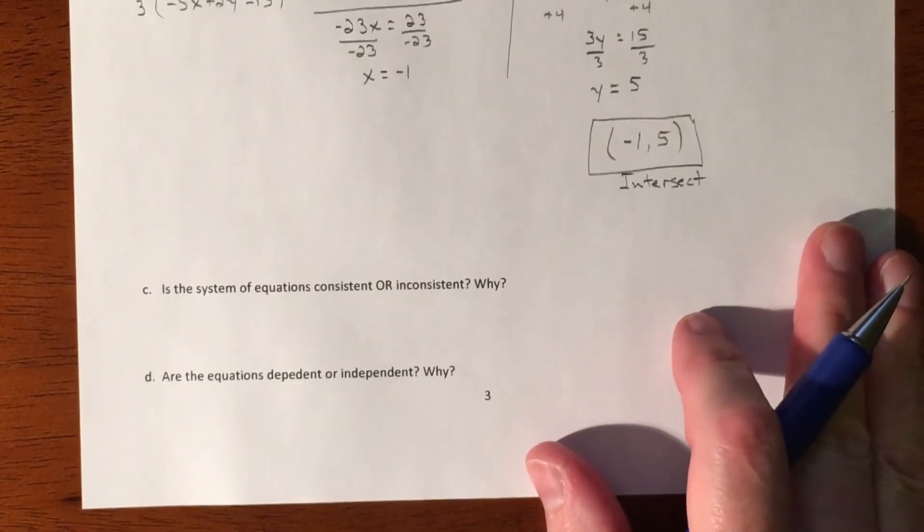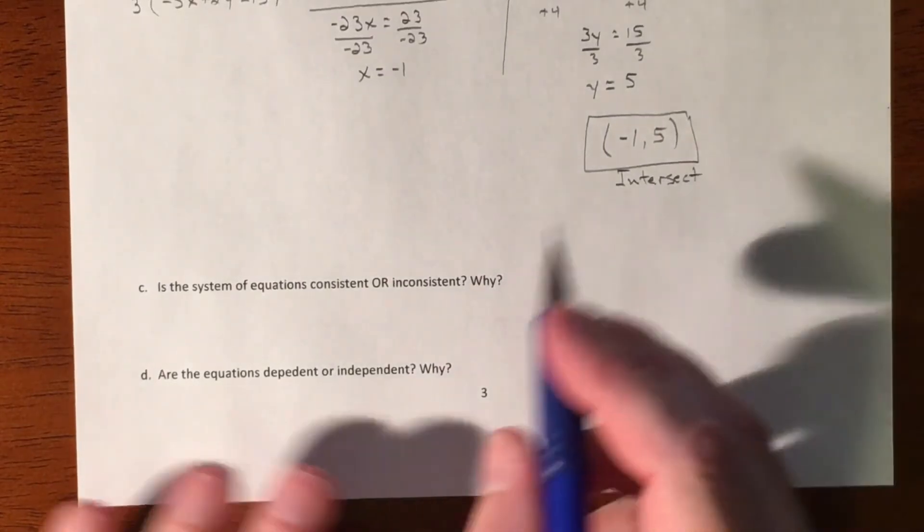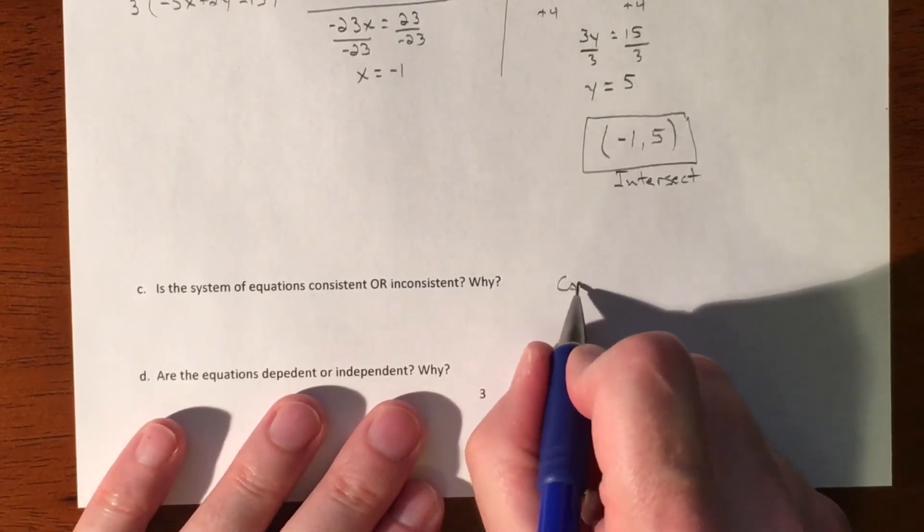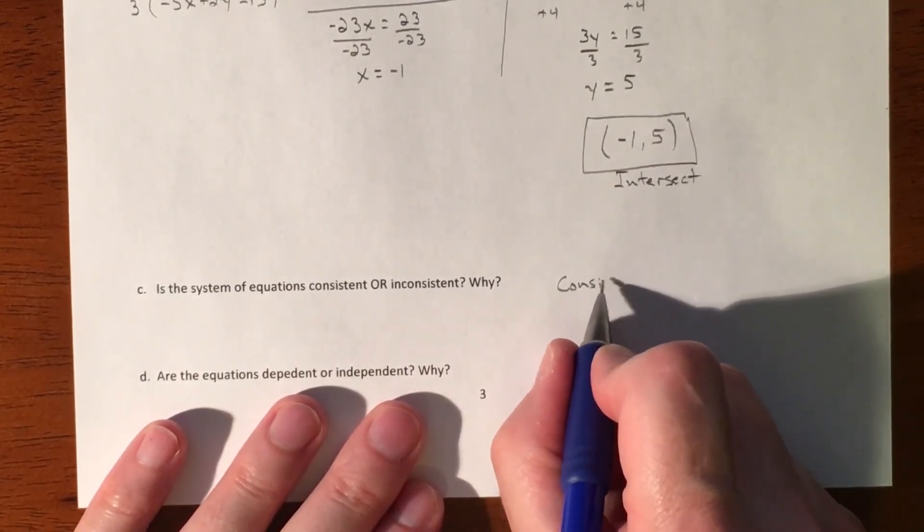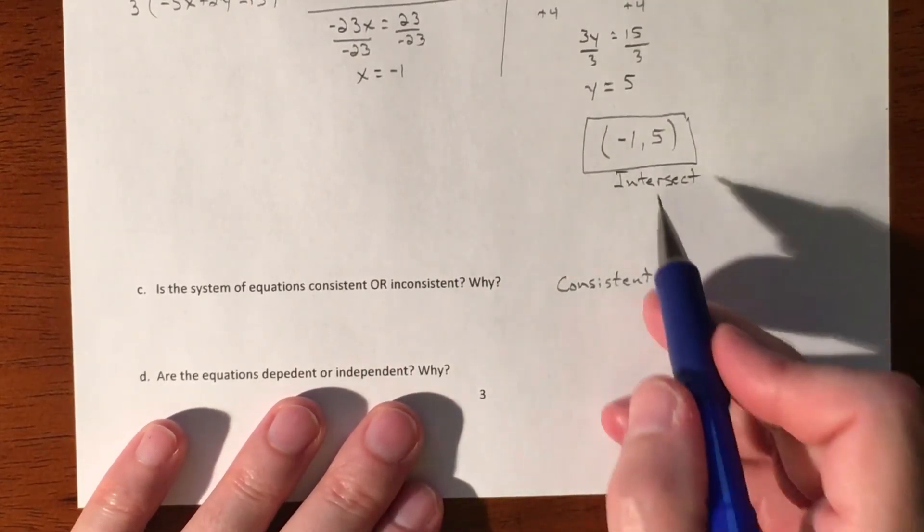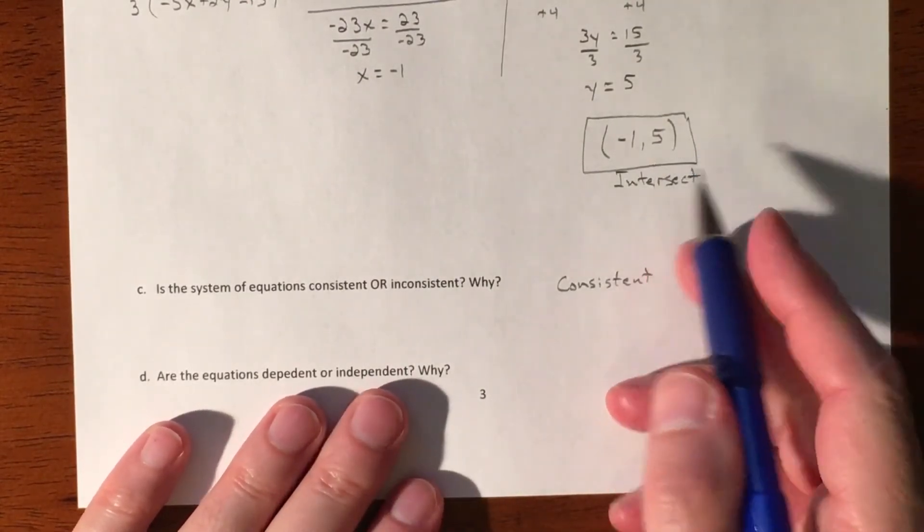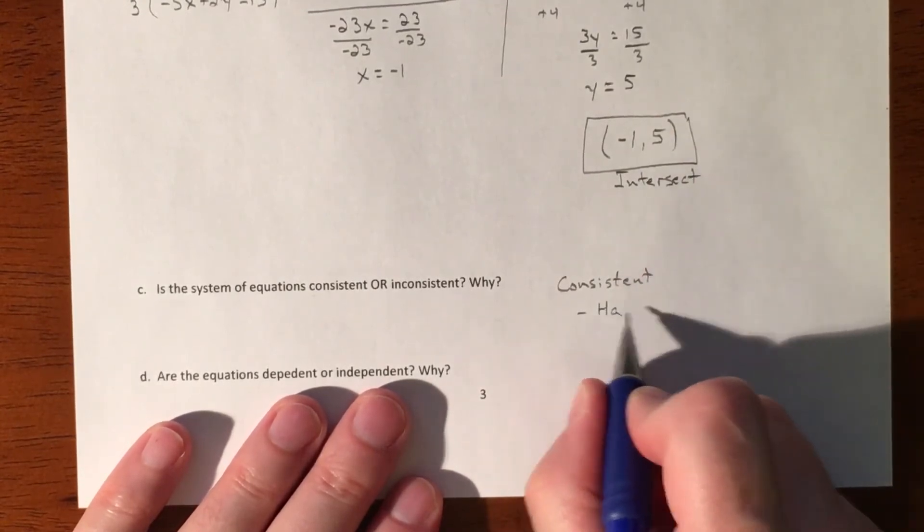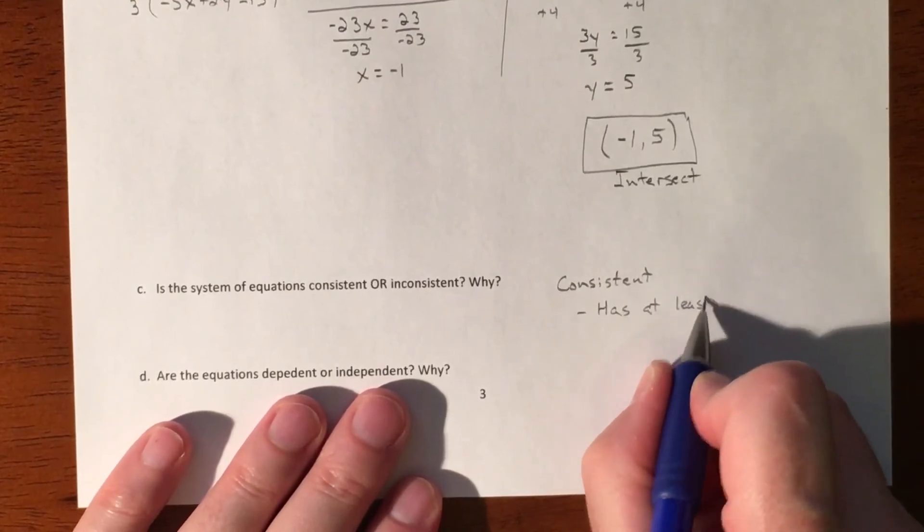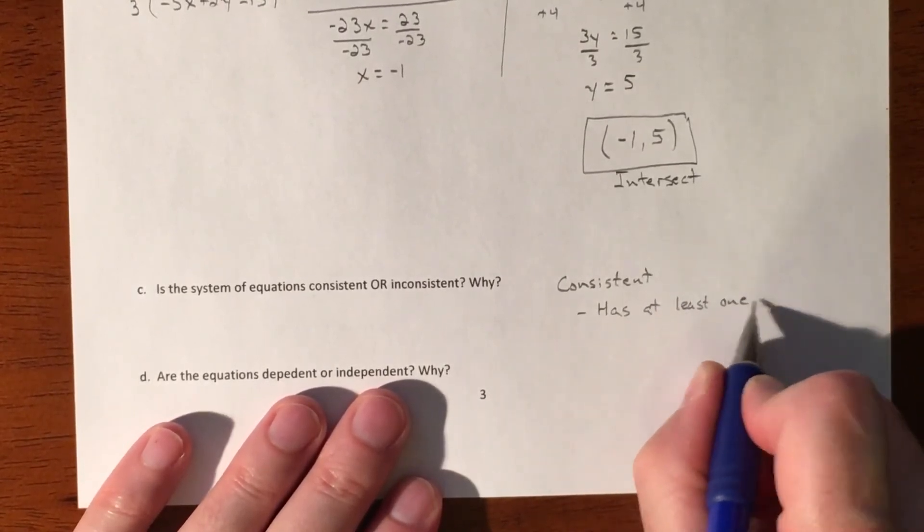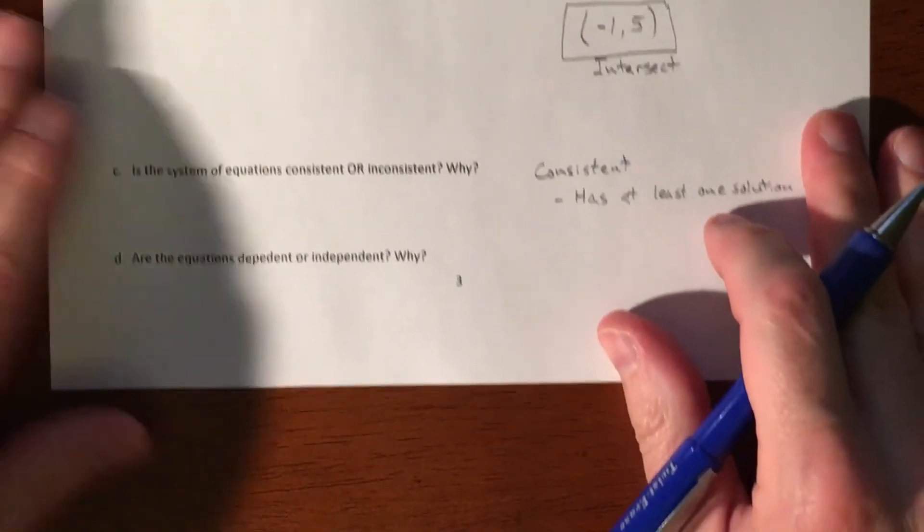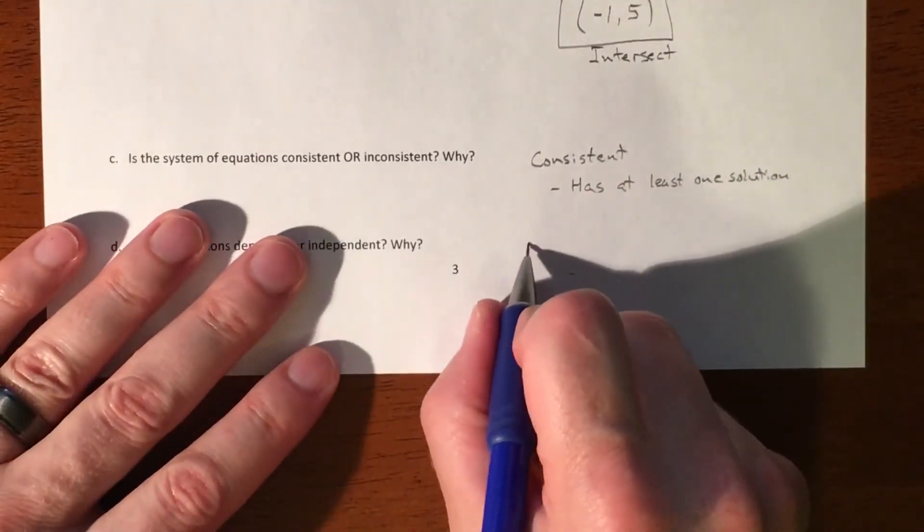So the last part of this is classifying. So since we have a solution, that makes our graph consistent. Consistent means you have a solution. But again, there's two different kinds of having a solution. You have either infinite solutions or a solution. So consistent because it has at least one solution.